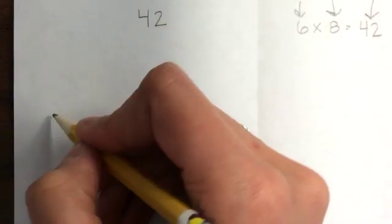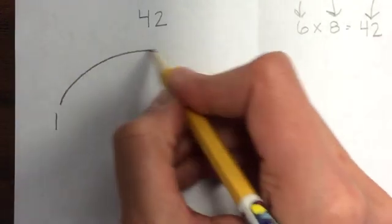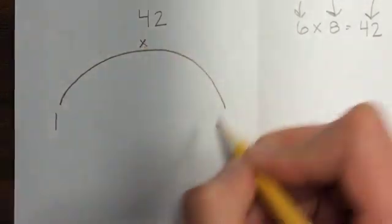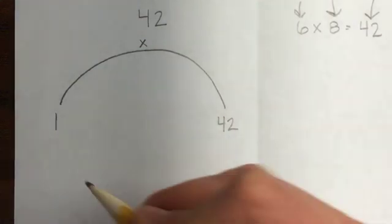So here we go. I'm going to start with 1, and I'm going to multiply 1 times what and get 42? 1 times 42.